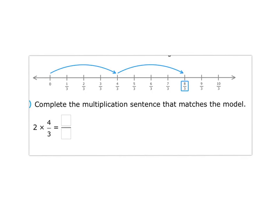You'll also see some fractions on a number line. Complete the multiplication sentence that matches the model. You can see the fraction is 4 thirds, so here it is, 4 thirds. How many times are they doing it? Once, twice. And what does that give you? 8 thirds.